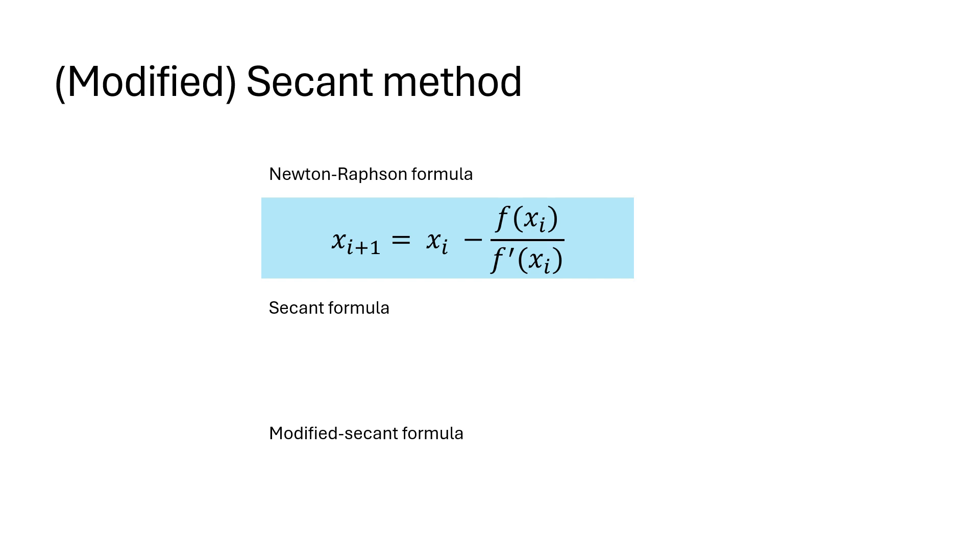The secant method solves this problem by approximating the derivative in the Newton-Raphson formula by a backward finite difference, which leads to this iterative equation.